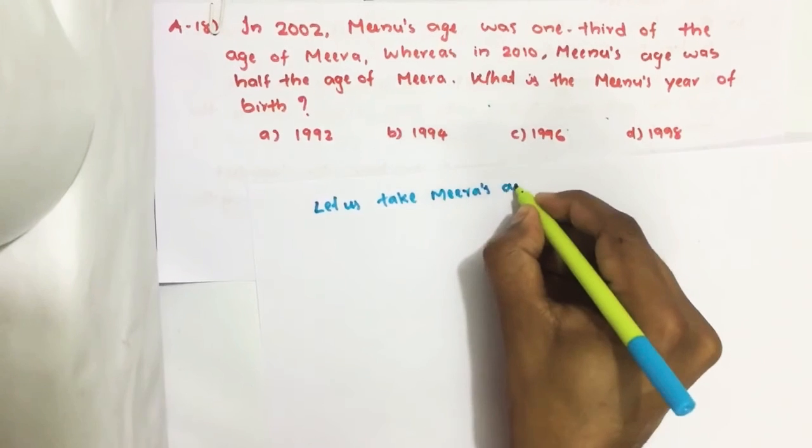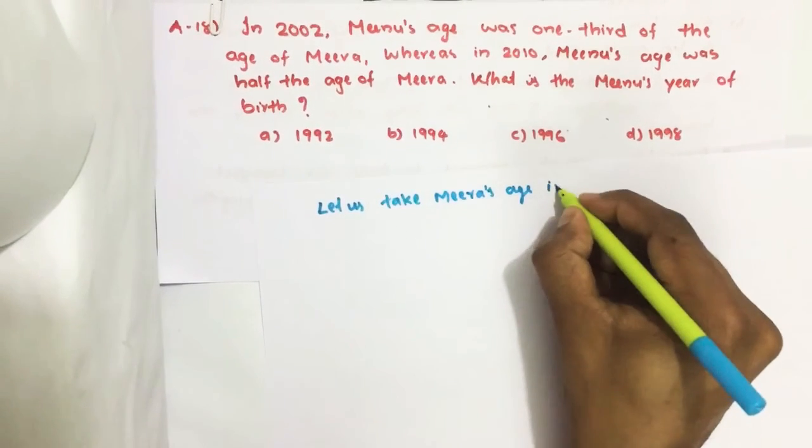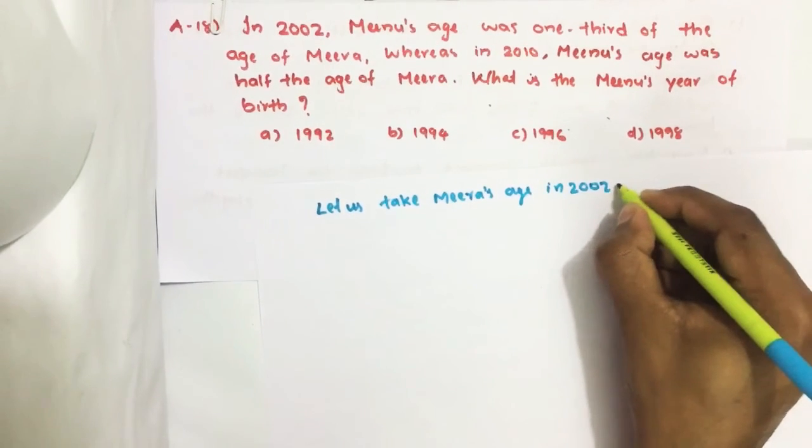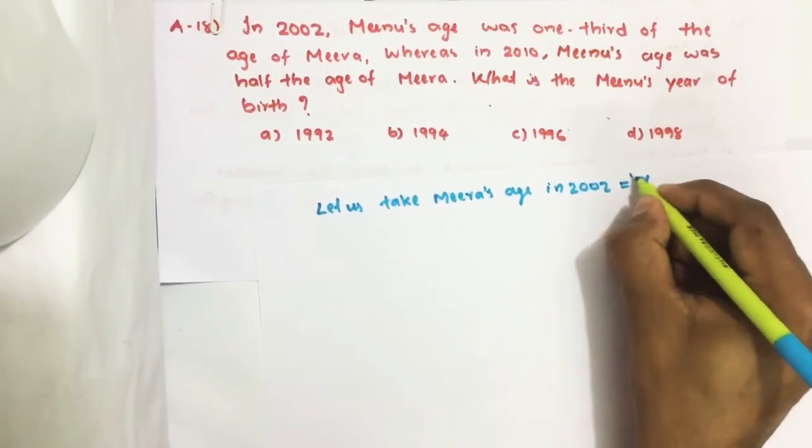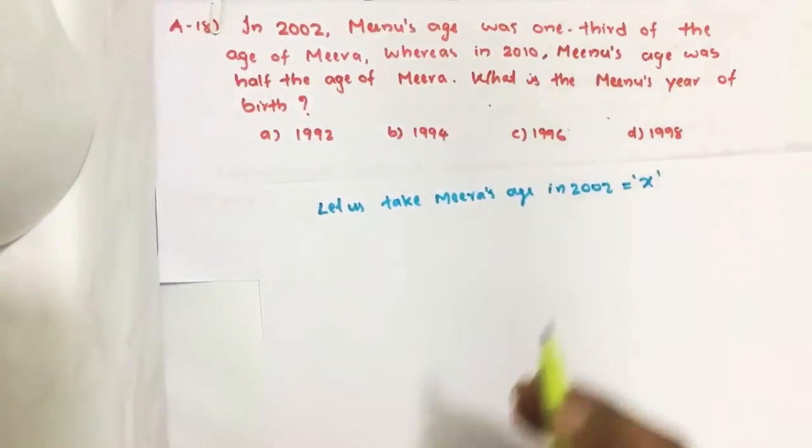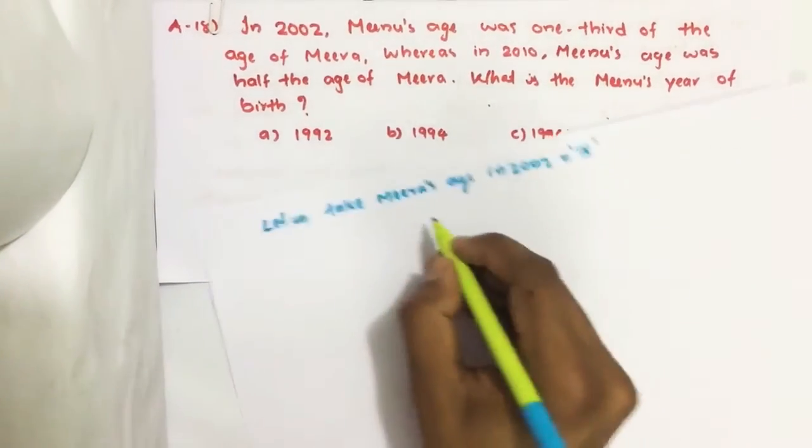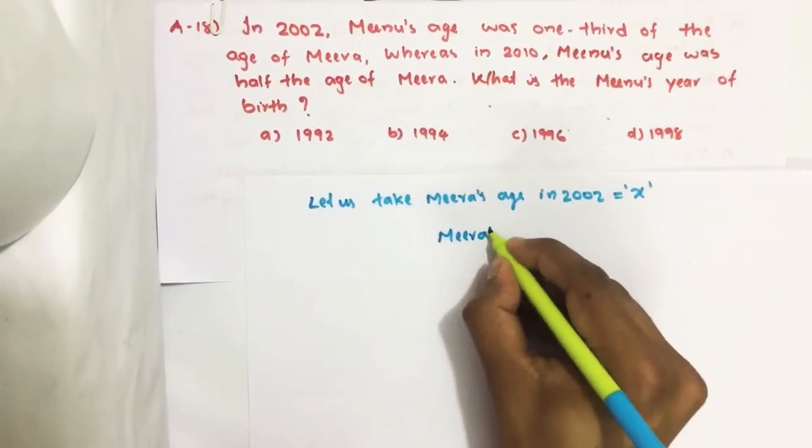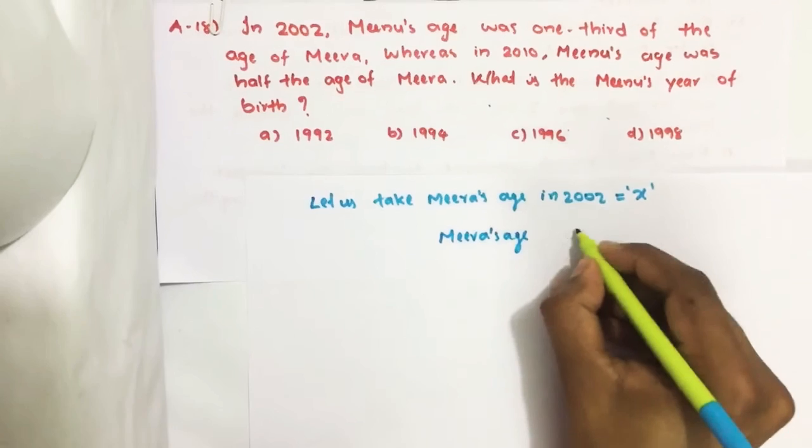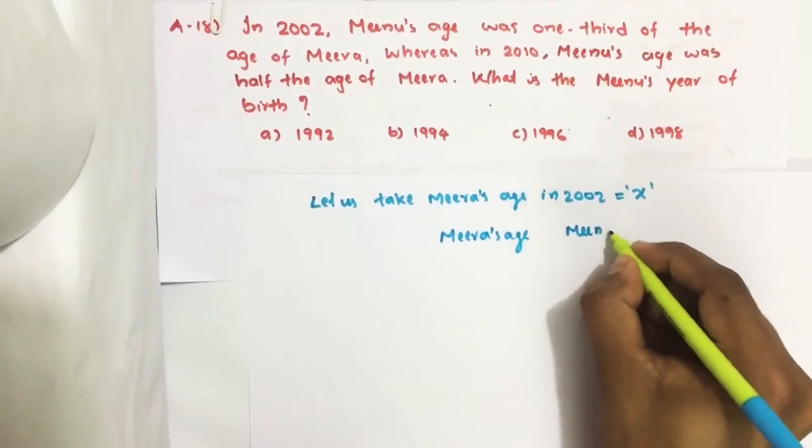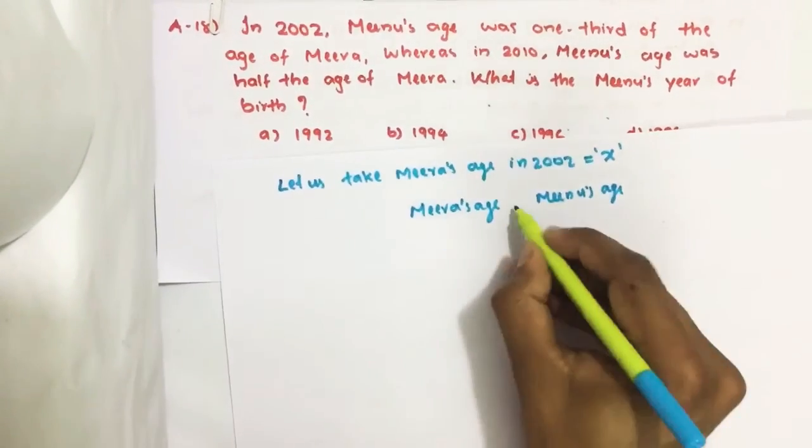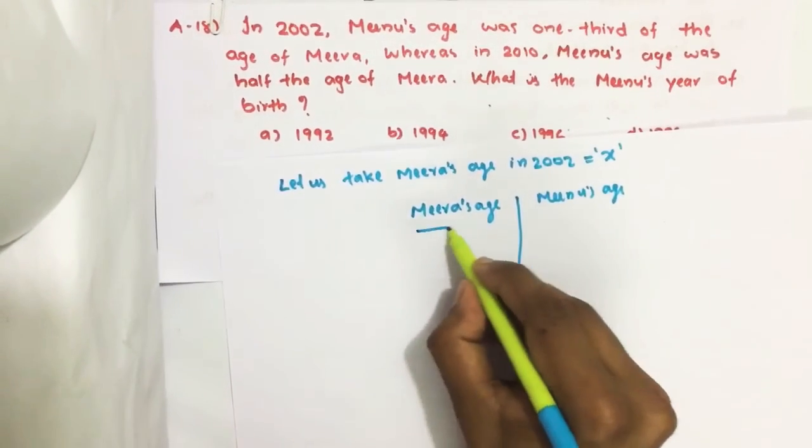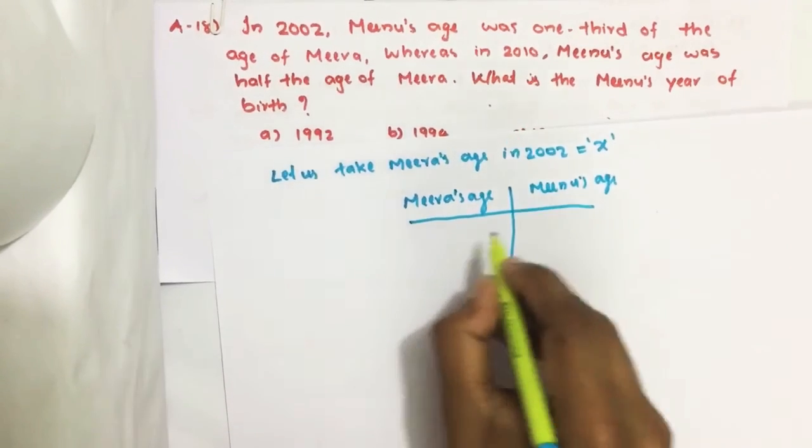Mira's age in 2002 as X. In 2002, Mira's age is X. Then draw a column: Mira's age, Minoo's age in 2002.